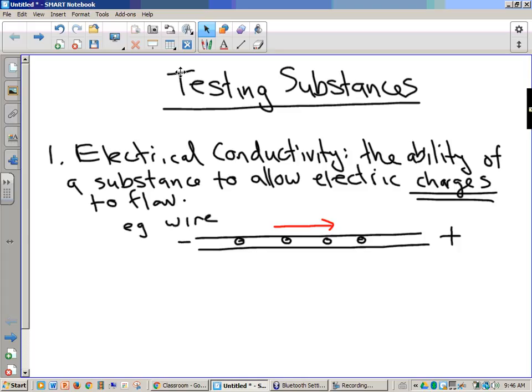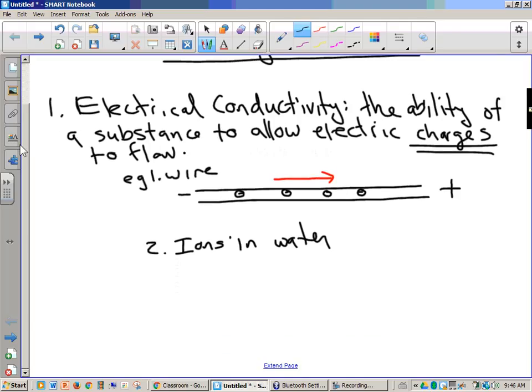But we want to know whether a substance can conduct electricity. So a second way in which we can have electrical conductivity is ions in water. Let me draw up what I mean. I'm going to move my page down here so I've got a little more room.